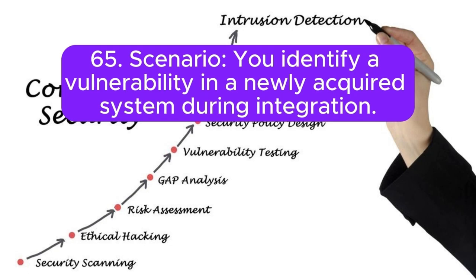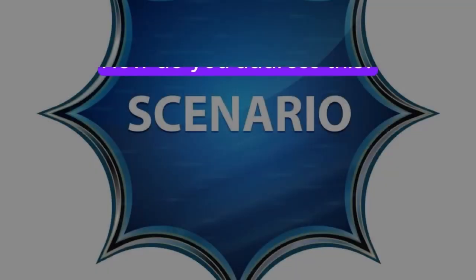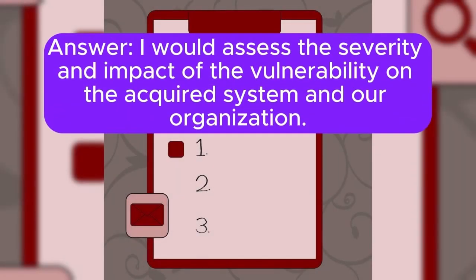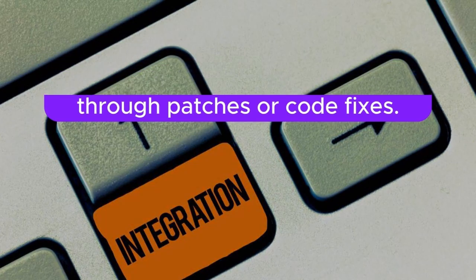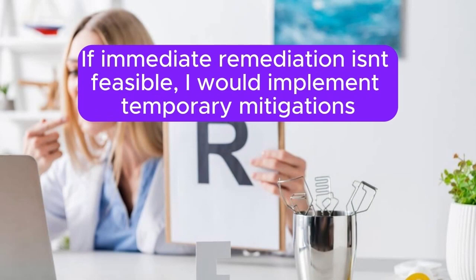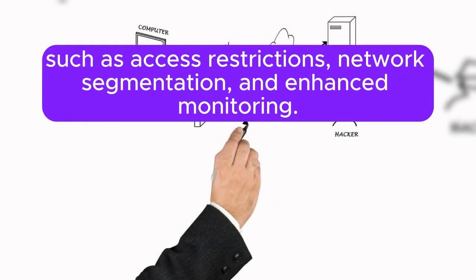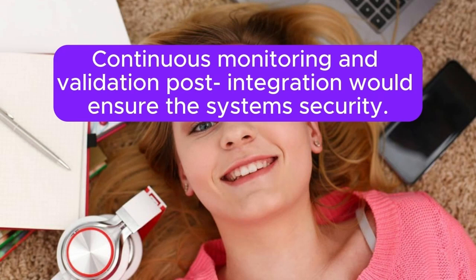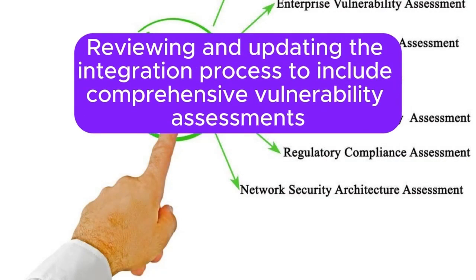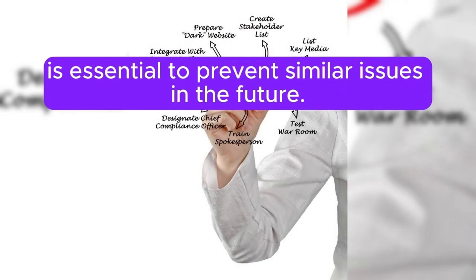Scenario 65: You identify a vulnerability in a newly acquired system during integration. How do you address this? I would assess the severity and impact of the vulnerability on the acquired system and our organization. Coordinating with the integration team, I would prioritize remediation through patches or code fixes. If immediate remediation isn't feasible, I would implement temporary mitigations such as access restrictions, network segmentation, and enhanced monitoring. Communication with stakeholders about the risk and the remediation plan is crucial. Continuous monitoring and validation post-integration would ensure the system's security. Reviewing and updating the integration process to include comprehensive vulnerability assessments is essential to prevent similar issues in the future.